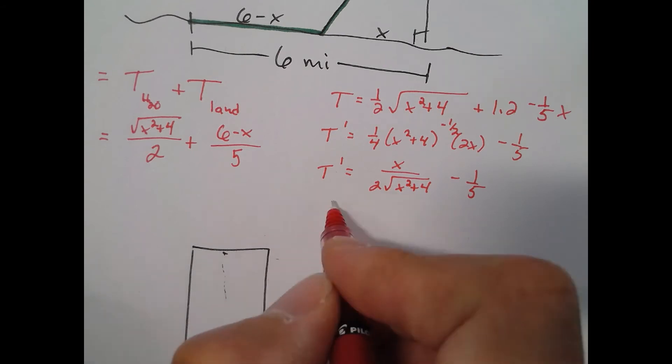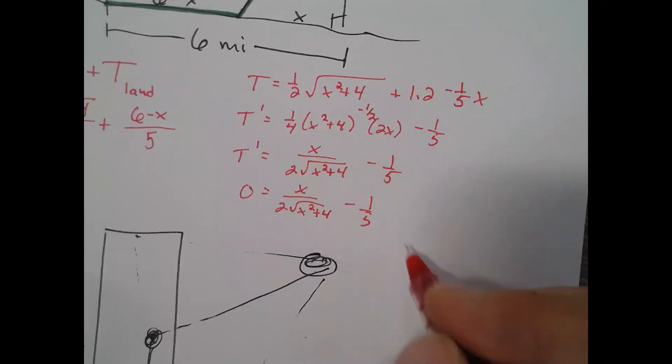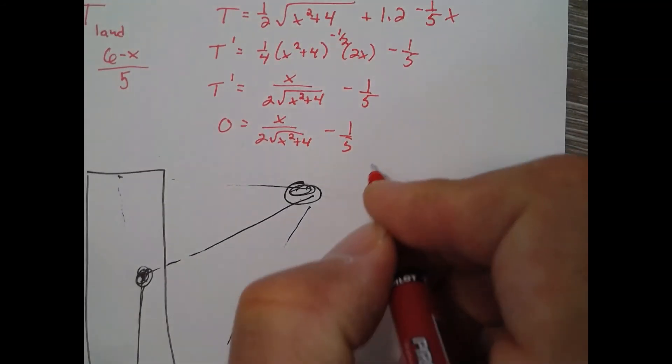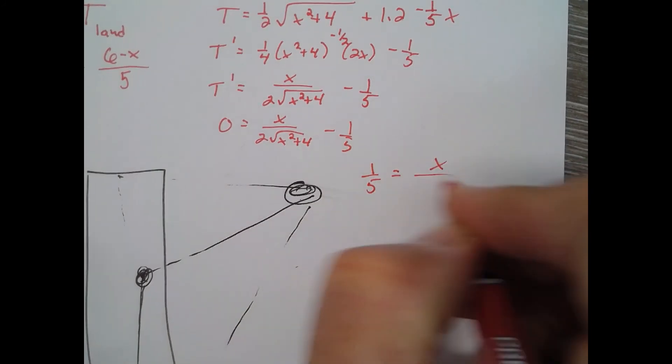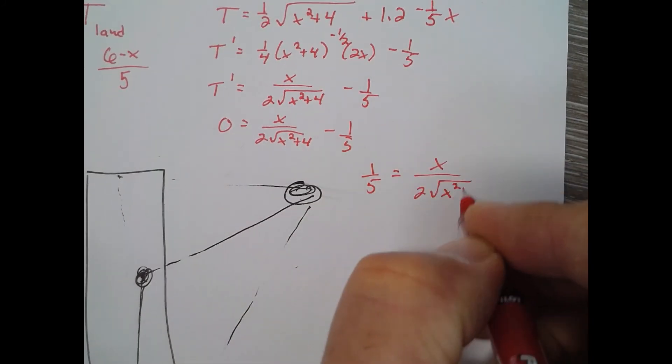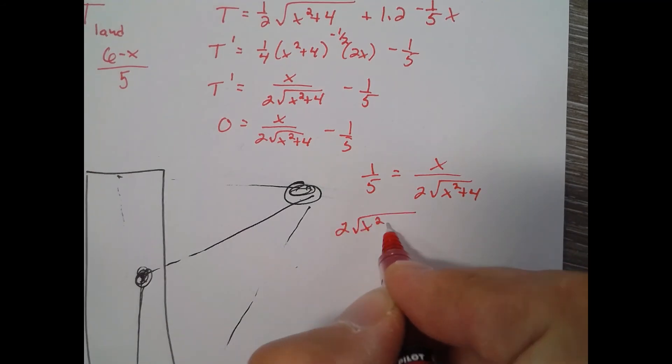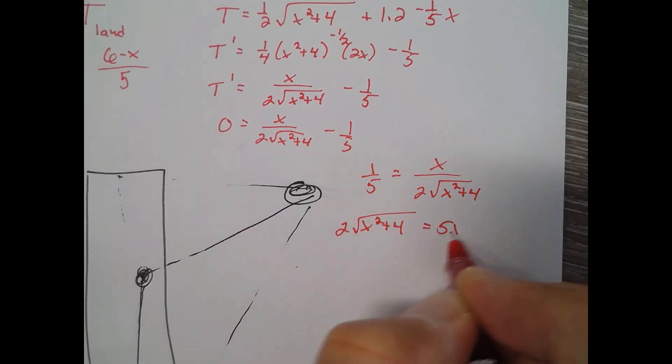Set it equal to zero and solve for x. I'm going to add one-fifth to each side. So one-fifth equals x over two square root of that stuff. Cross multiply. I'm going to square both sides so it's 4 times x squared plus 4 equals 25x squared.